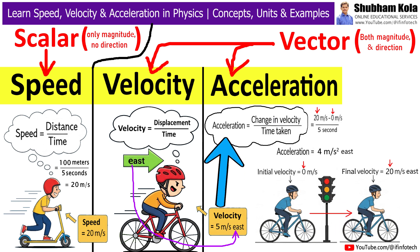We can calculate acceleration by taking the change in velocity and dividing it by the time taken. For example, initial velocity equal to 0 meter per second, final velocity 20 meters per second. Then change in velocity equal to 20 minus 0. And here time taken is 5 seconds. So, acceleration equal to 4 meters per second square east. That means your velocity is increasing by 4 meters per second every second.